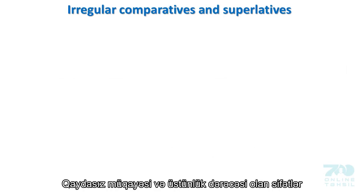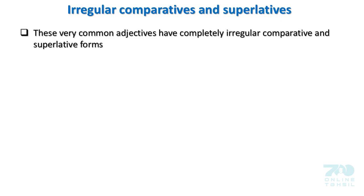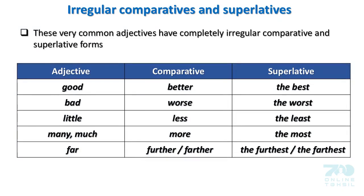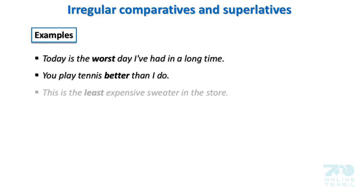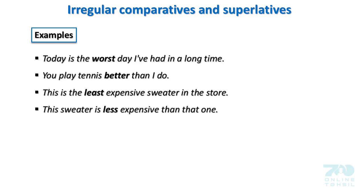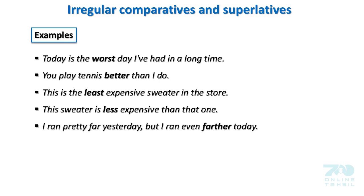Irregular comparatives and superlatives: These very common adjectives have completely irregular forms. Good → better → the best. Bad → worse → the worst. Little → less → the least. Many/much → more → the most. Far → further/farther → the farthest/the furthest. Examples: Today is the worst day I have had in a long time. You play tennis better than I do. This is the least expensive sweater in the store. This sweater is less expensive than that one. I ran pretty far yesterday but I ran even farther today.